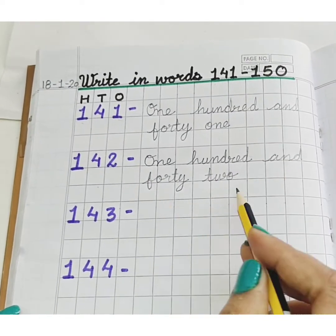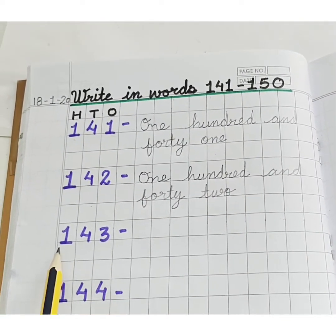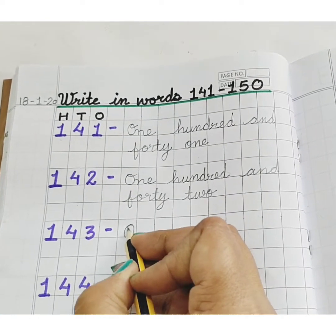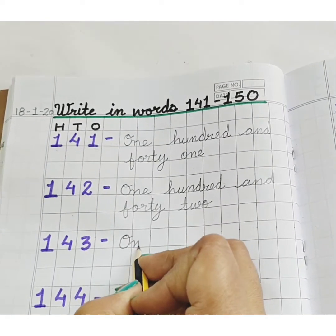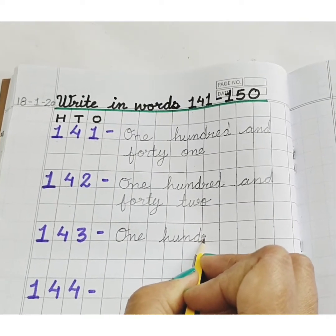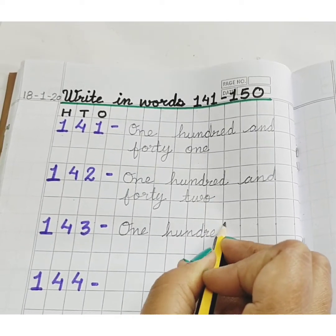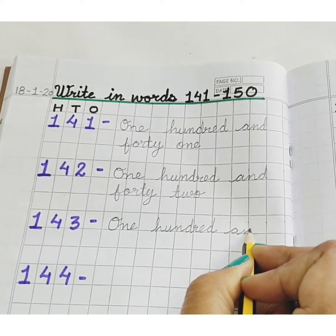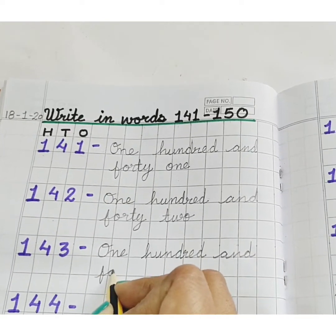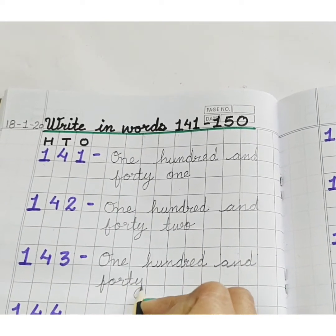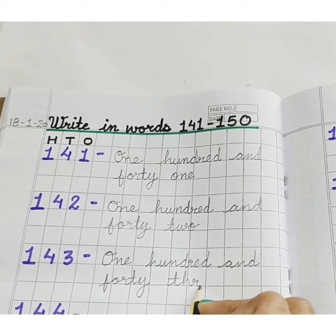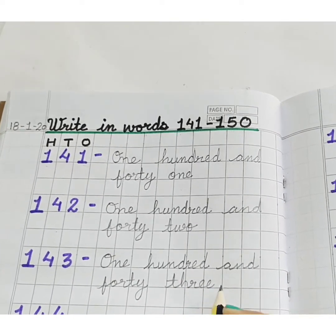ONE. H, U, N, D, R, E, D — ONE HUNDRED. AND F, O, R, T, Y — FORTY. T, H, R, E, E — THREE. 3. One Hundred and Forty Three. 143.